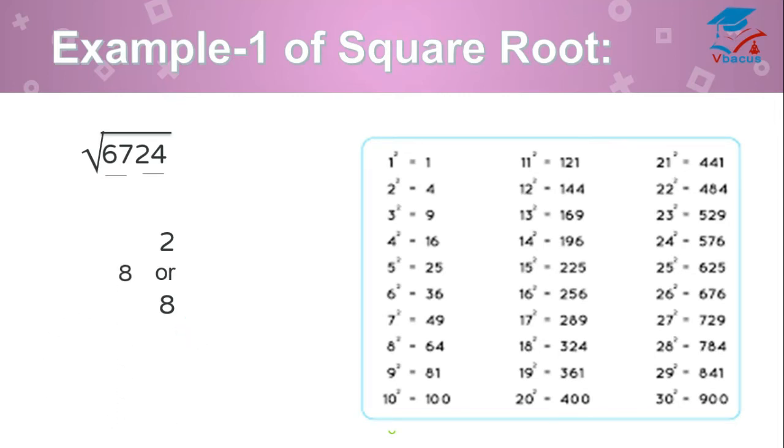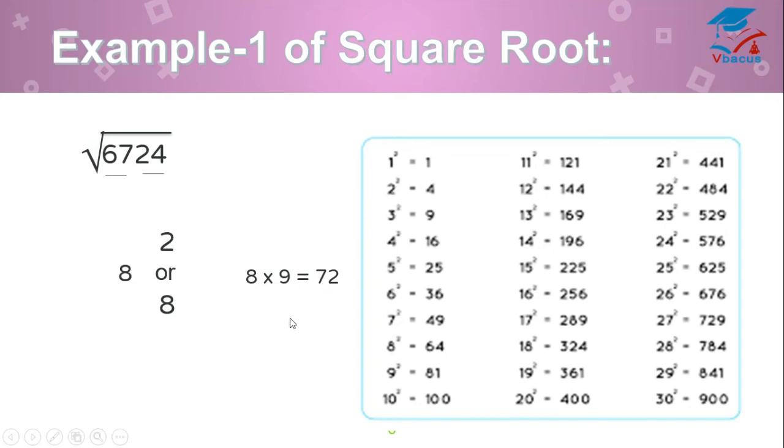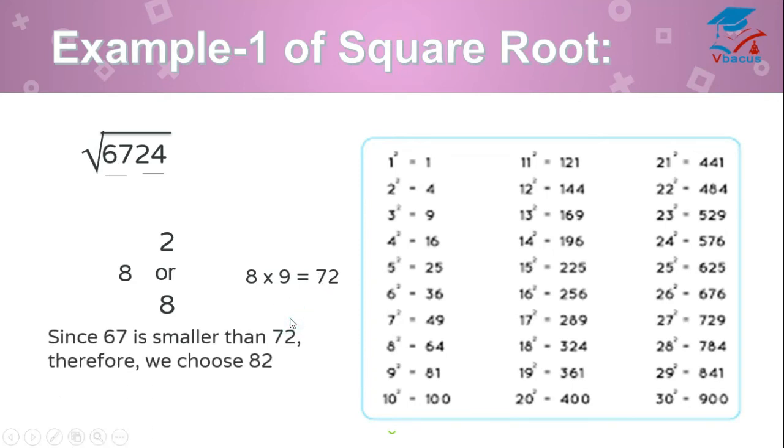Now, we have to choose. In unit place, it will be either 2 or 8. How to choose? See, just multiply 8, this tens digit number, with its next number. 8 and 9 are 72. And compare 67 and 72. Since 67 is smaller than 72, therefore, we choose 82, the smaller one. So, 82 is the square root of 6724.